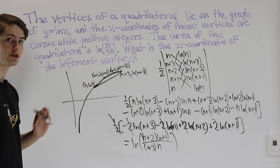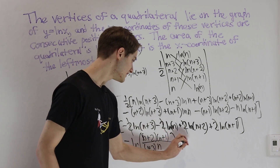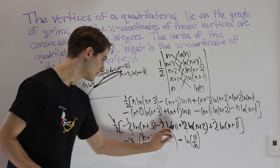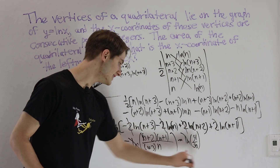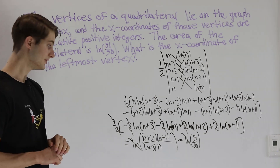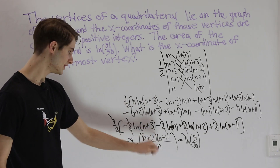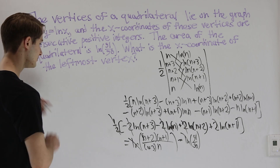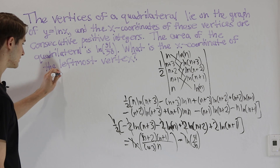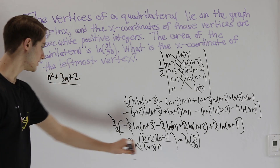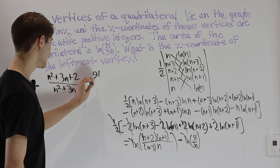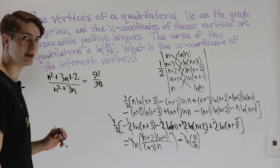We want this to equal the natural log of 91/90. For this to be true, we can cancel out the natural logs, meaning the arguments must be equal. So we need (n+2)(n+1) over n(n+3) to equal 91/90. Expanding the numerator gives n²+3n+2, and the denominator gives n²+3n. So we have (n²+3n+2)/(n²+3n) = 91/90.